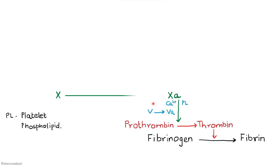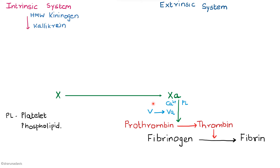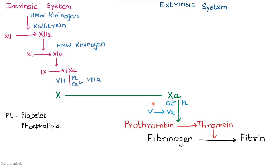Activation of factor 10 can occur by two methods: the intrinsic system and the extrinsic system. The intrinsic system is activated whenever there is exposure of collagen in blood vessels. In vitro, it can also be activated by exposure of blood to glass, catalyzed by high molecular weight kininogen and kallikrein. In this pathway, factor 12 is converted to factor 12a, which activates factor 11, which activates factor 9. Activated factor 9, along with calcium, platelet phospholipids, and activated factor 8, converts factor 10 to activated factor 10. The order is: 12, 11, 9, 8 — which in turn activates 10 to 10a.